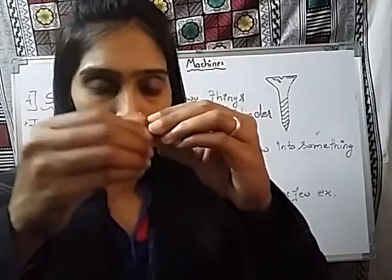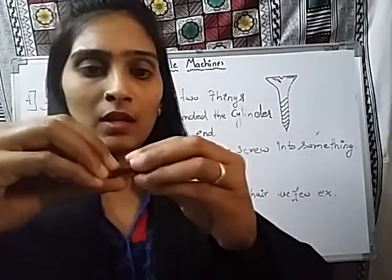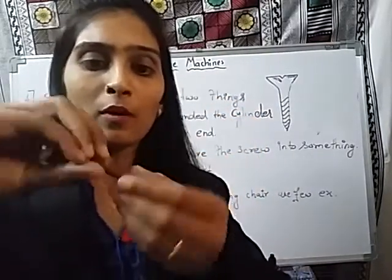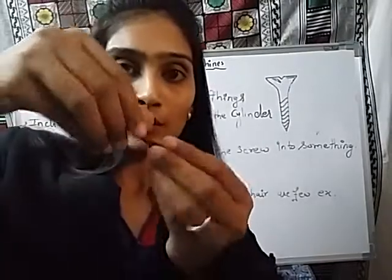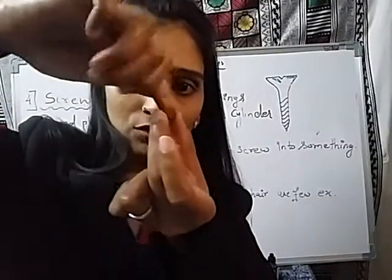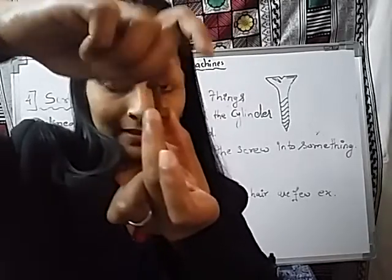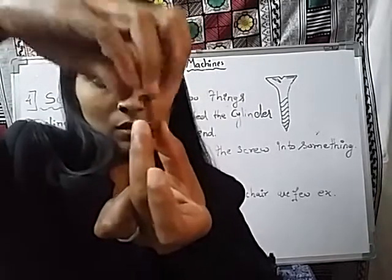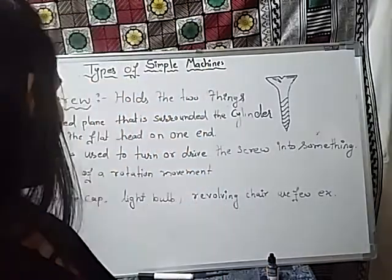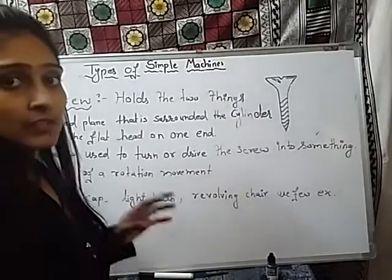For example, if I want to fix this screw into this bolt, then we have to perform a certain rotation. A certain rotation is performed by the screw to fix it into another object. Now there are certain examples where the mechanism of the screw is used.